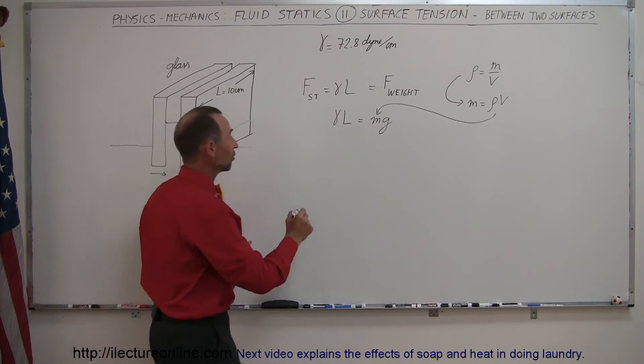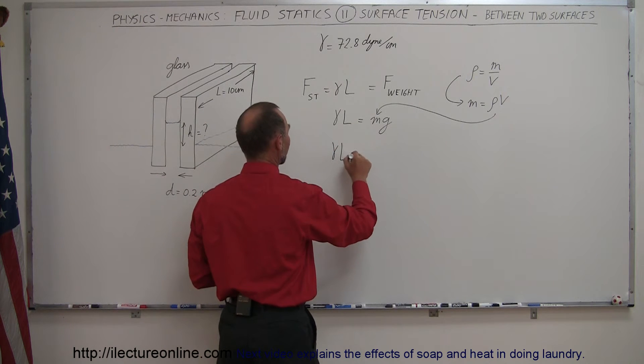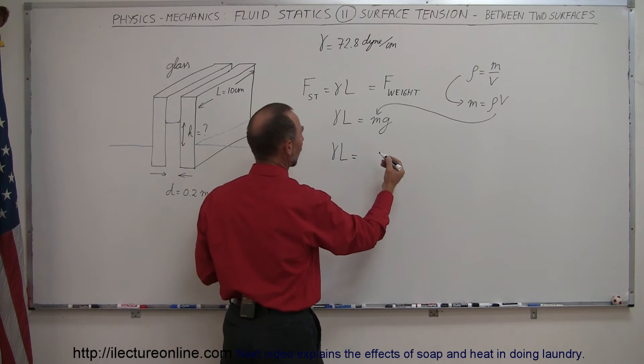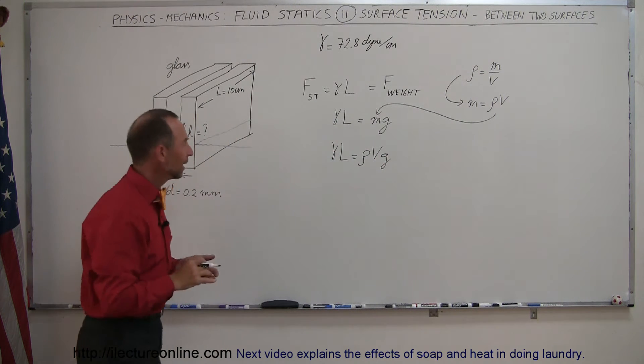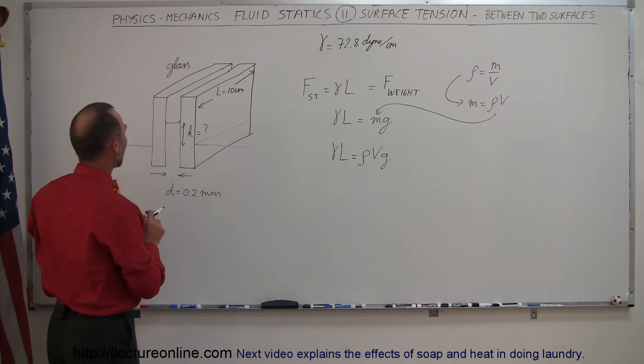When we do that, our equation becomes: the force due to surface tension is equal to the weight of the water, which is now written as ρVg, and of course the volume is the volume of the water that gets pulled up.